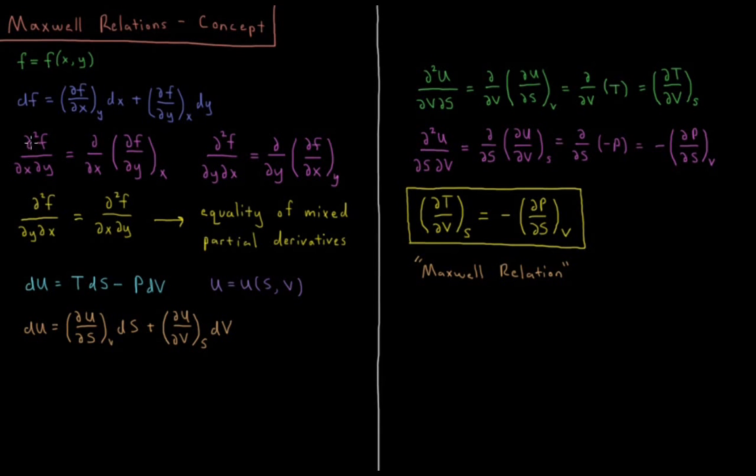What about the second derivative of f with respect to x and y? This is called a mixed partial derivative. d²f/dxdy equals: we take the partial derivative of the function with respect to y at constant x, then we take the derivative of that resulting function with respect to x.